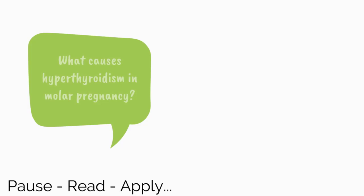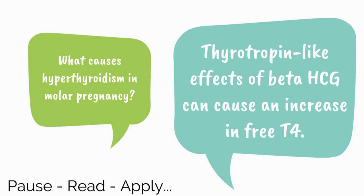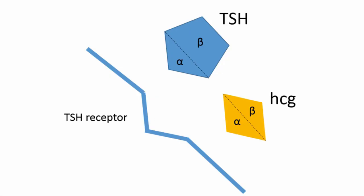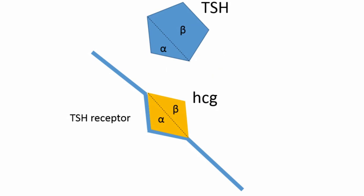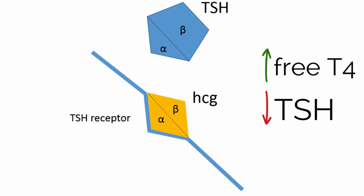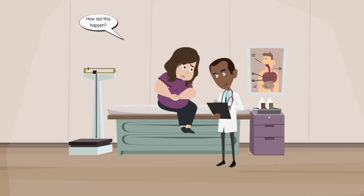What causes hyperthyroidism in molar pregnancy? Thyrotropin-like effects of beta-HCG can cause an increase in free T4, although it is rare for lab values to be outside the normal range. The HCG molecule is similar in structure to the TSH molecule, with the same alpha subunits. Because of the similar structures, HCG can act directly on TSH receptors, resulting in increased levels of thyroid hormones and decreased TSH levels.